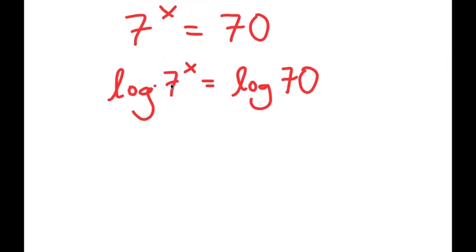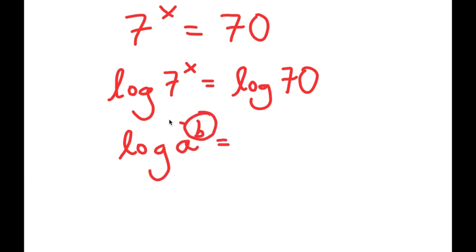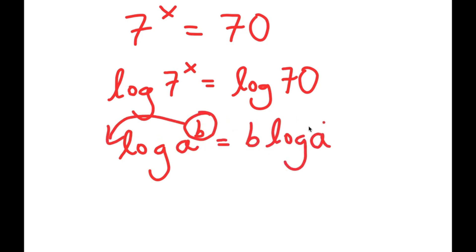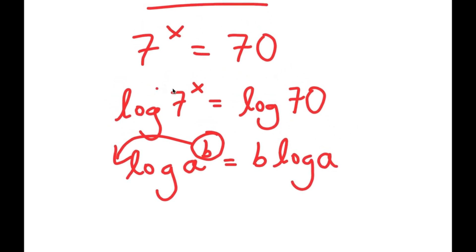The reason you should do this is because you can use the property: log of a to the power of b — you can move b to the front — so log(a^b) equals b times log(a). This is useful because before, x was an exponent and it's really hard to solve for x in that state, but now we can move x to the front as an actual term.